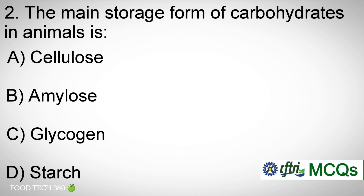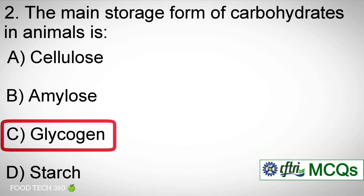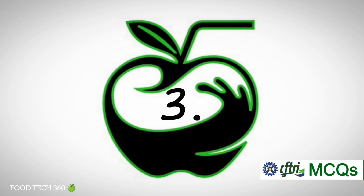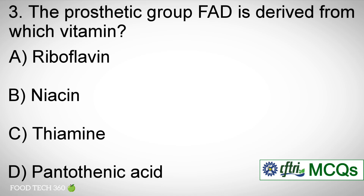Question number two: the main storage form of carbohydrates in animals is — options: a) Cellulose, b) Amylose, c) Glycogen, d) Starch. Correct answer: c) Glycogen.